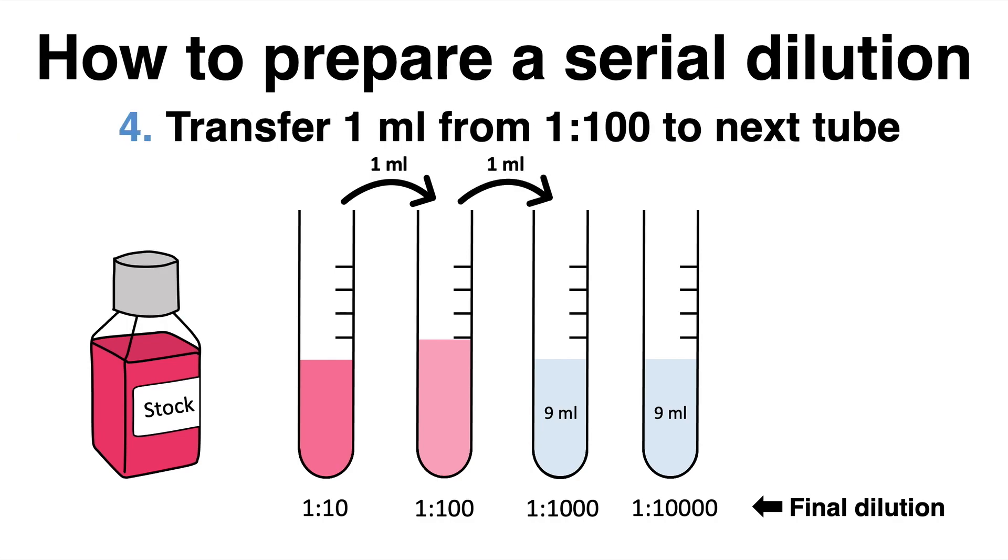Now this whole process is repeated. 1 ml of the 1 to 100 dilution is transferred into the next tube and with another dilution factor of 10, this makes a 1 to 1000 dilution.